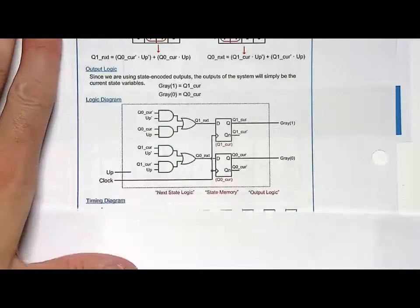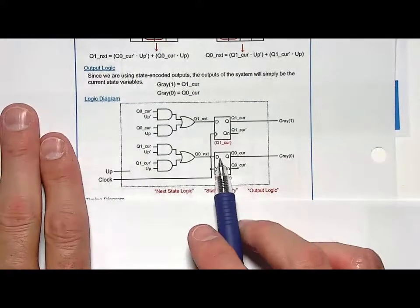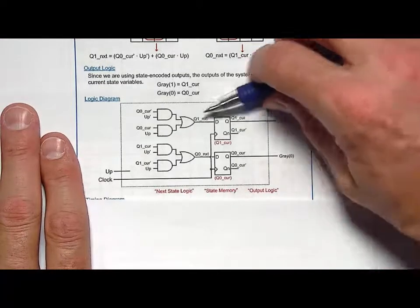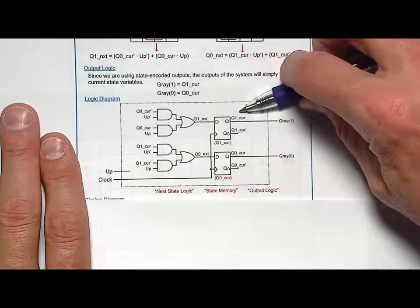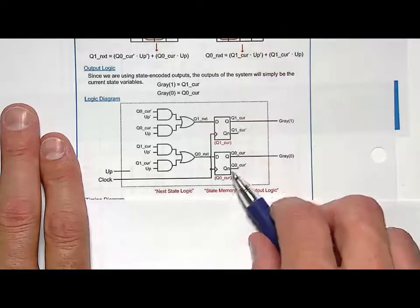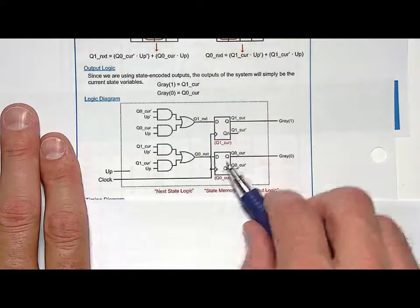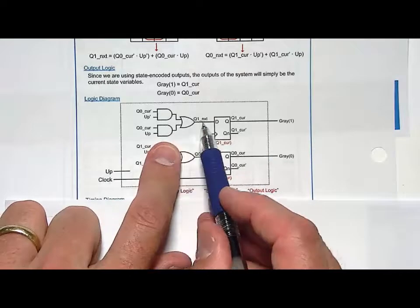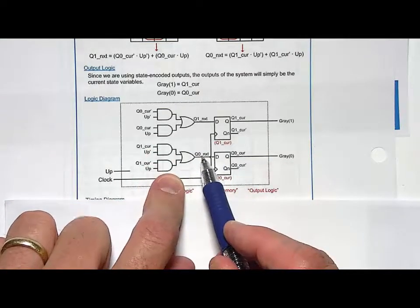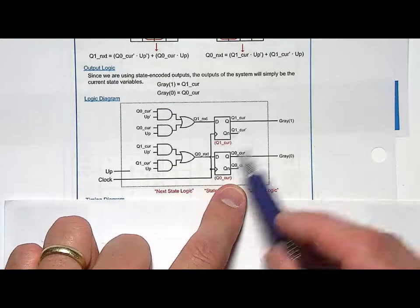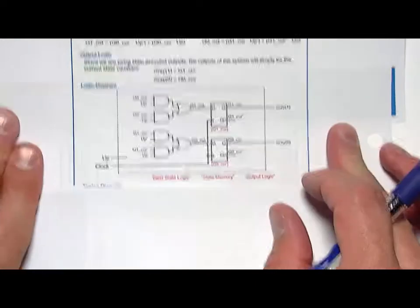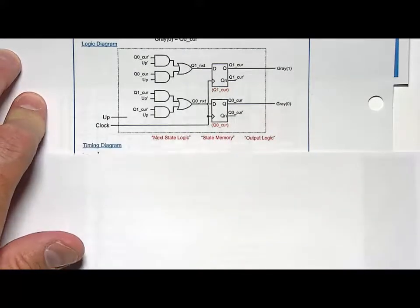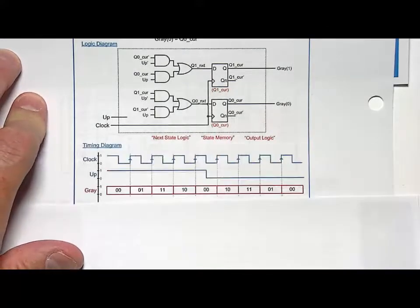What does the final logic diagram look like? My state memory is going to be 2 D flip-flops. Not just 2 D flip-flops, they had to be assigned to a particular state variable bit. So this one was Q1 current and Q1 next. This one was Q0 current and this was Q0 next. So that's how I assign them. And then for each of those, I simply pop down my next state logic for Q1 next, my next state logic for Q0 next, and look at my output logic. Wires directly to the current state. That's because it's a state encoded output. That was a decision I made in order to make the counter have smaller output logic.